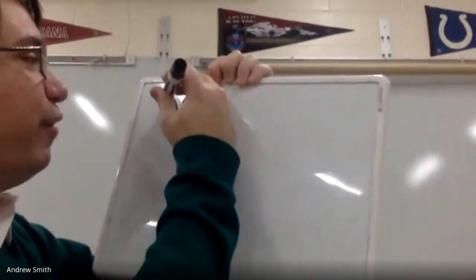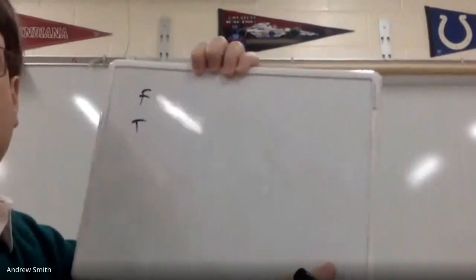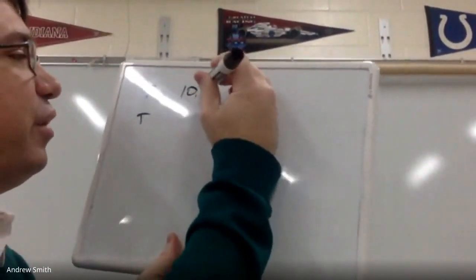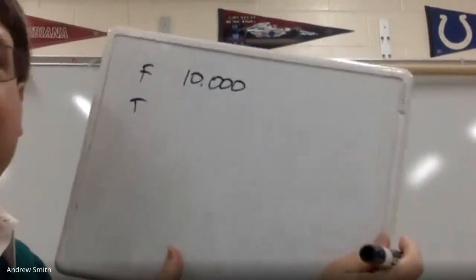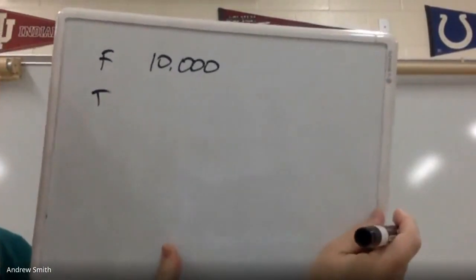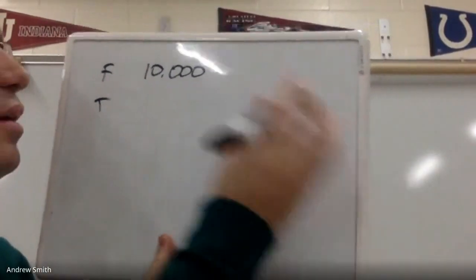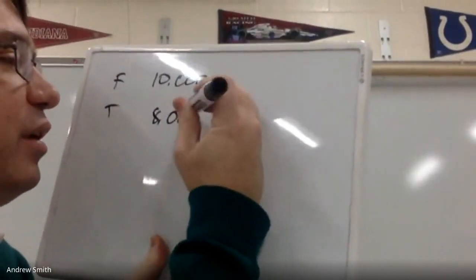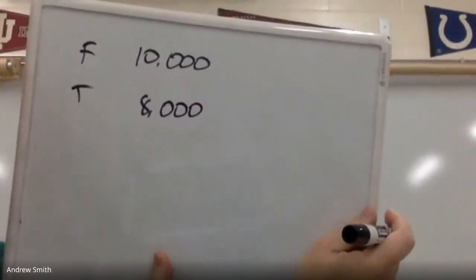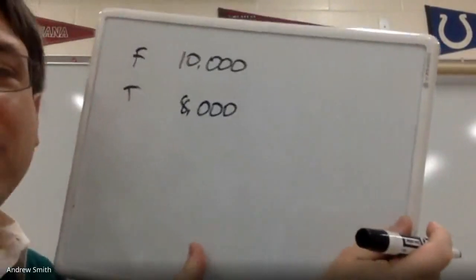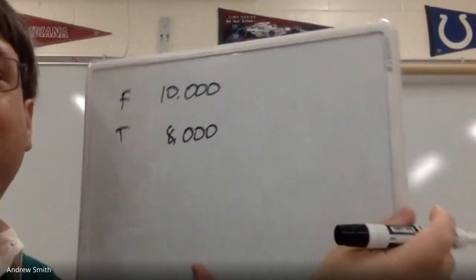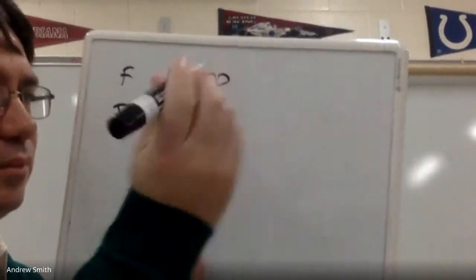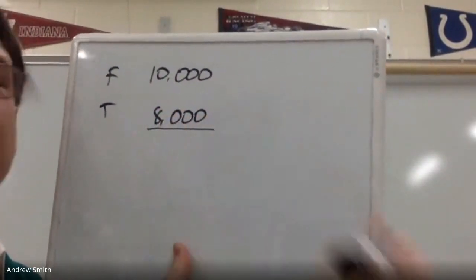Let's say we have a Ford and a Toyota. It costs $10,000 to make a Ford and $8,000 to make a Toyota. If you are buying a car solely on price, which one are you going to buy? You're going to buy the Toyota.